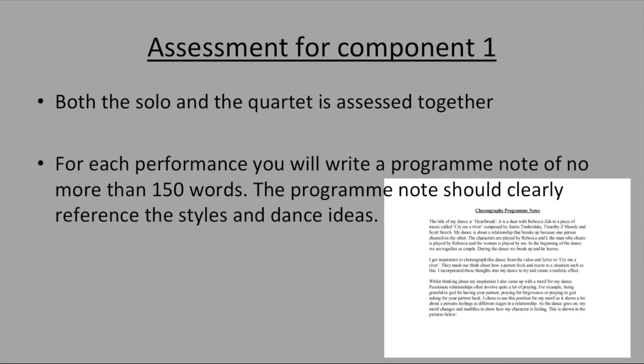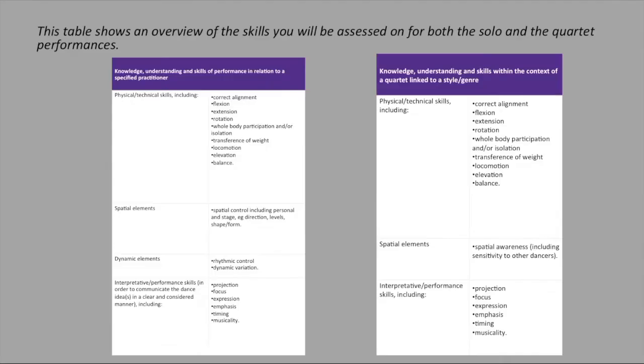For the assessment of component one, the solo and the quartet are assessed together. For each performance, you will write a programme note of no more than 150 words, which should clearly reference the styles and dance ideas. A table is provided showing an overview of the skills you would be assessed on for both the solo and the quartet performances.